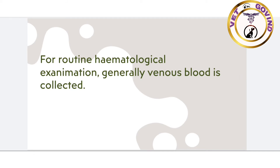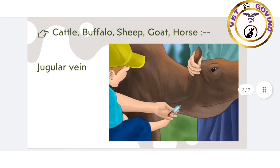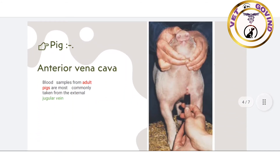In cattle, buffalo, sheep, goat, and horse, the blood sample is collected from the jugular vein, as you can see here. In pig, the site of blood collection is from the anterior vena cava.